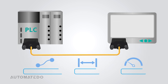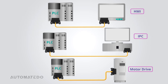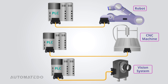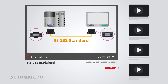In industrial automation, the RS-232 interface is a prevalent choice, offering reliable point-to-point connectivity over short distances at lower speeds. This standard is commonly utilized in some PLCs to facilitate communication with devices like human-machine interfaces, industrial PCs, motor drives, robots, CNC machines, vision systems, and similar industrial equipment. If you have a unique experience dealing with the RS-232 standard in industrial automation, please share it in the comments section.